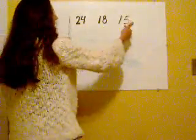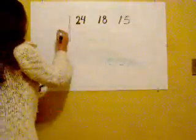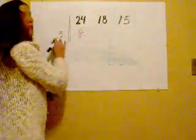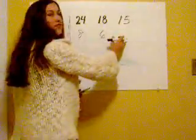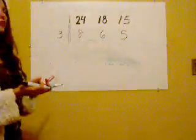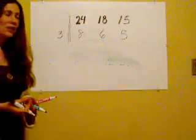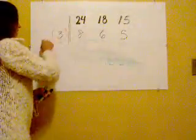So once again, ask yourself what number goes into 24, 18, and 15. And the number that I see is 3. So 3 goes into 24 eight times, 3 goes into 18 six times, and 3 goes into 15 five times. And then you ask yourself, out of these three numbers, do all of them share a common factor? Well, these two do, but they don't all share a common factor. So at this point, I've actually found my GCF.